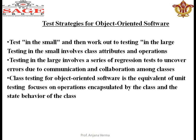Now we will come to the object-oriented software test strategy. In the small, class is the smallest part — attributes and operations are tested. Testing in the large involves a series of regression tests as new class functions come in; errors in them are uncovered, and communication and correlations between classes are tested, then testing moves to the large part.